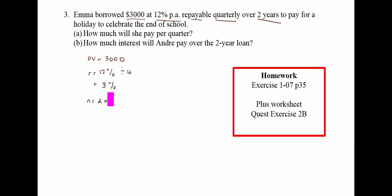So if I multiply that by 4, I get 8. And I also can now read from the table. I can look up 3% for 8 time periods, and $1 gets me $7.0197.